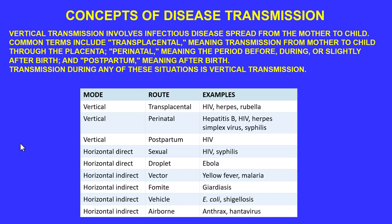For horizontal direct transmission, we have several types. Sexual transmission includes HIV, syphilis, hepatitis B, and a variety of sexually transmitted diseases, which we'll address later in the course.